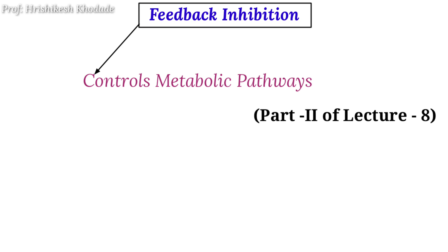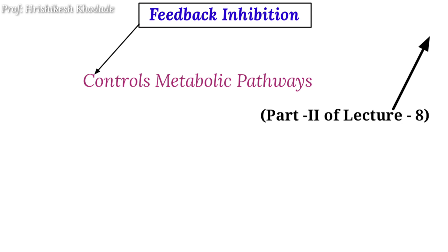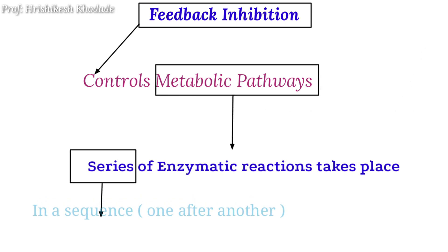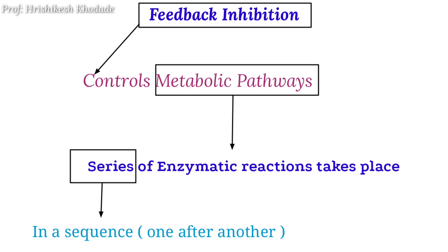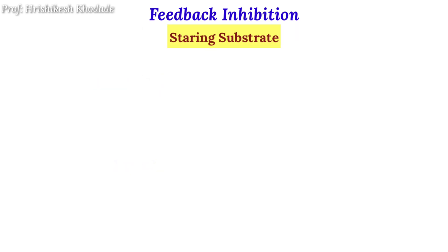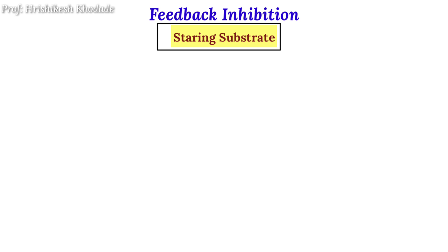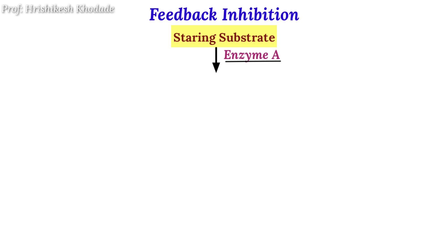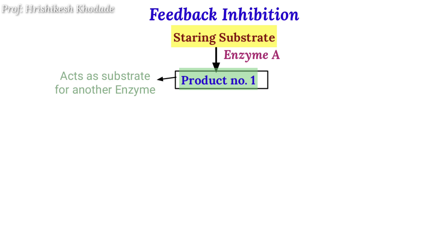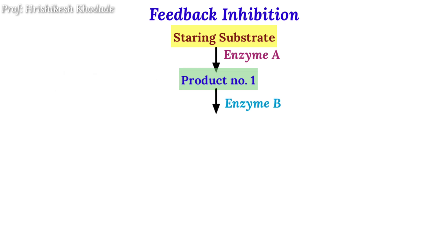In part 2 of our 8th lecture we have seen how metabolic pathways work, where a series of enzymatic actions take place. We have a starting substrate on which enzyme A shows its action. By showing its action, enzyme A produces product 1, and this product acts as a substrate for another enzyme known as enzyme B, and by the enzymatic action of enzyme B we get product 2.